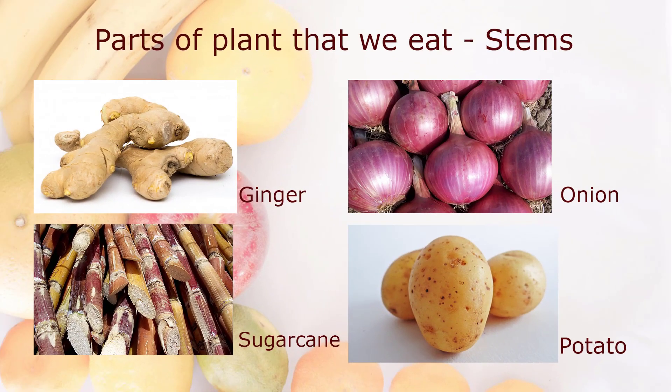Parts of plants that we eat — Stems: ginger, onion, sugarcane, and potato.